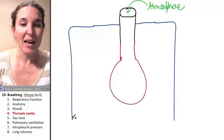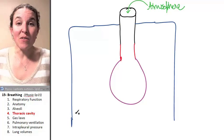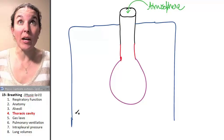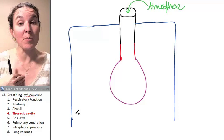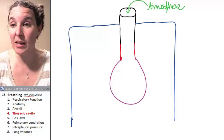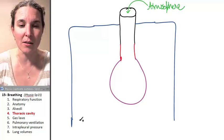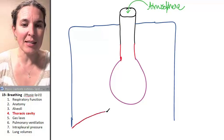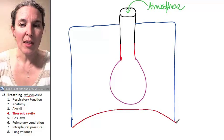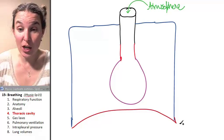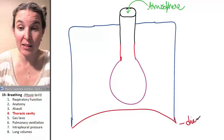At the base of the thoracic cavity, separating the thoracic cavity from the abdominal pelvic cavity is a structure made out of skeletal muscle. And this thing is the diaphragm. This is very important. It actually is shaped like this. This is the diaphragm.